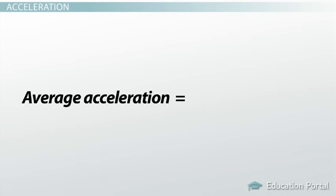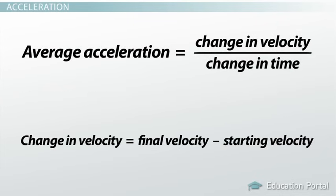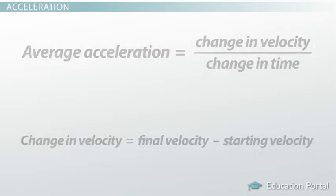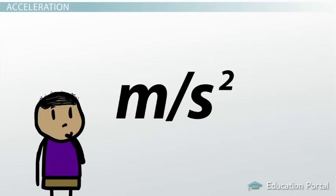The equations are: average acceleration equals change in velocity divided by change in time. Change in velocity equals final velocity minus starting velocity. The units of acceleration are meters per second squared, but something else is required.